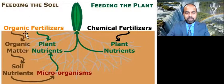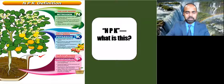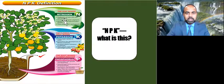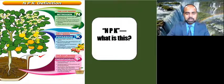That's the difference between chemical and organic fertilizers. Here you can see the three macronutrients — NPK. NPK stands for N (nitrogen), P (phosphorus), and K (potassium).